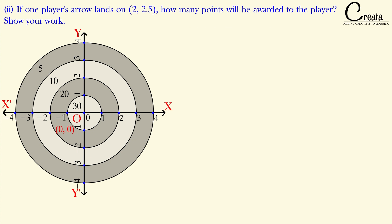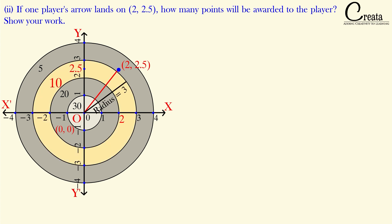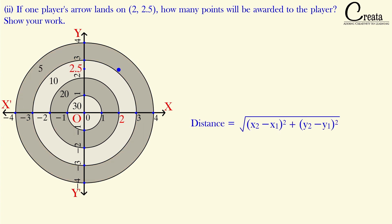In part 2, it is asked: if one arrow lands at the point (2, 2.5), how many points will be awarded? First, let's locate the point — x-coordinate is 2 and y-coordinate is 2.5. By looking at the figure, it's slightly confusing whether this point is in the 10-point zone or the 5-point zone or on the boundary. So we need to calculate the distance from the origin using the distance formula.